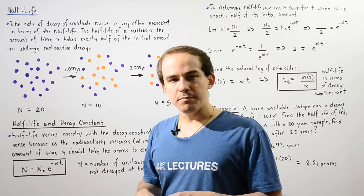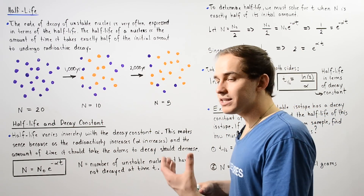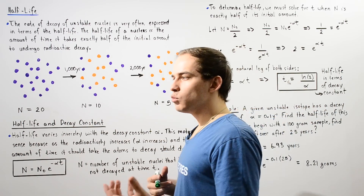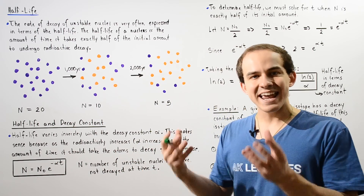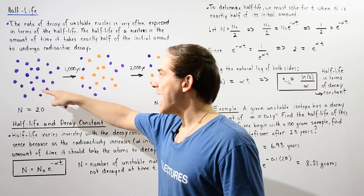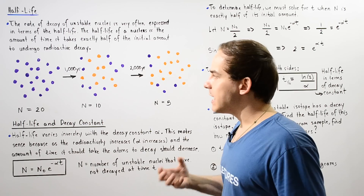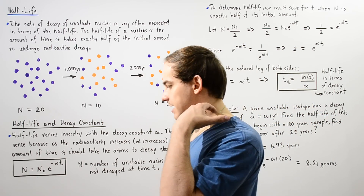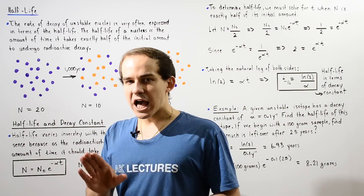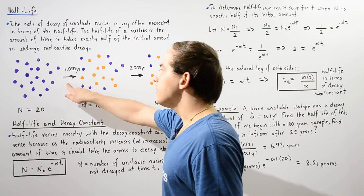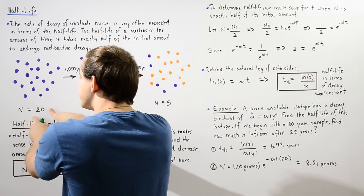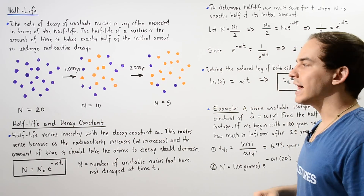To visualize what the half-life is, let's consider the following example. Let's suppose we begin initially at a time of zero with a sample of 20 unstable parent nuclei, shown in purple. These atoms are unstable and have not yet undergone radioactive decay. Now let's suppose the half-life is given by 1,000 years, meaning if we wait 1,000 years from the initial time of zero, exactly half of this sample of 20 atoms will undergo radioactive decay.